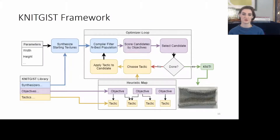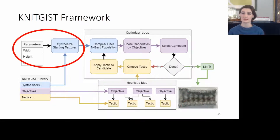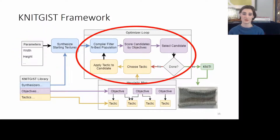KnitGist starts with a library of synthesizers, objectives, and tactics. The objectives and tactics are combined by a programmer into a heuristic map, which defines the objective function for the optimization loop. Synthesizers generate random textures that start off with a width and a height defined by the programmer.